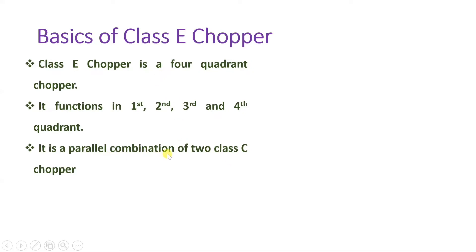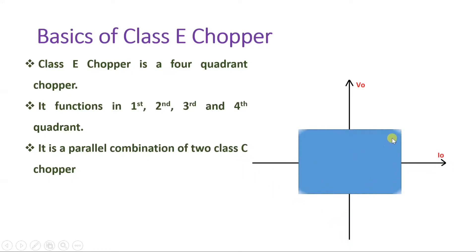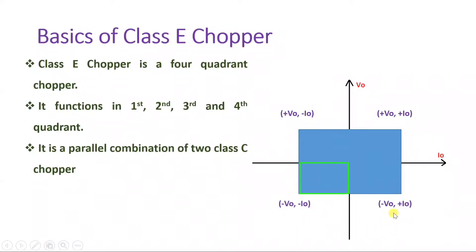By connecting two parallel Class C choppers, we can make Class E chopper function in all 4 quadrants. If you observe its output characteristics, voltage is on the vertical axis and current is on the horizontal axis. In the first quadrant, output voltage and output current are both positive. In the second quadrant, output voltage is positive and output current is negative. In the third quadrant, both are negative. In the fourth quadrant, output voltage is negative and output current is positive.